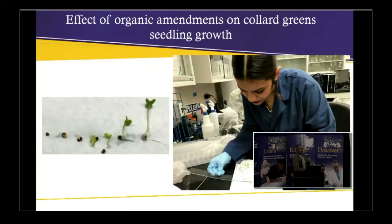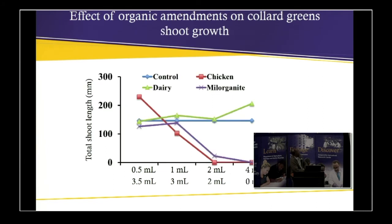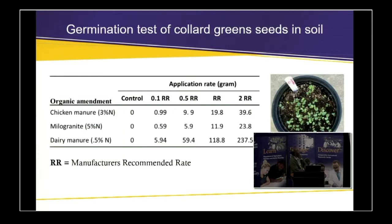We also studied the growth of seedlings. Students measured the shoot and root lengths of seedlings that germinated in the petri dish. At lower levels of organic amendments, chicken manure enhanced root growth. The control, grown in water only, had a root length of about 350 millimeters, but at higher levels, germination was inhibited. Dairy manure actually enhanced root growth even at higher levels. Similar results were found for shoot length.